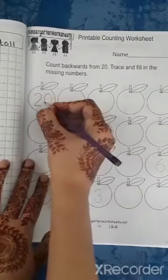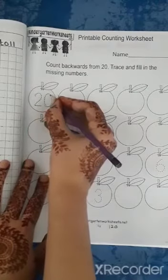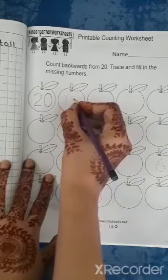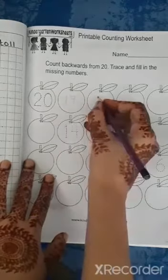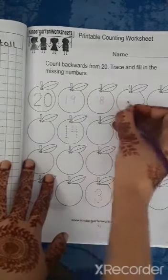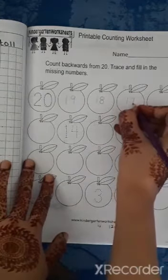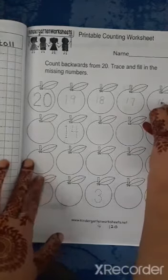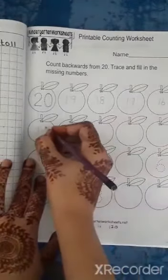Now trace 20. Like this. Well done. 19. 18. 17. 16. 15.